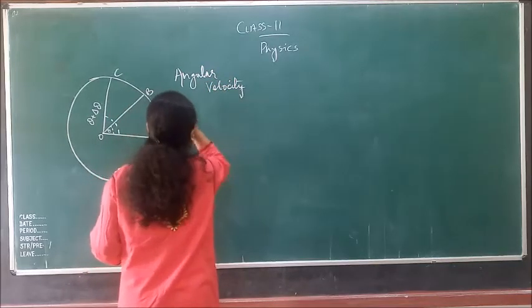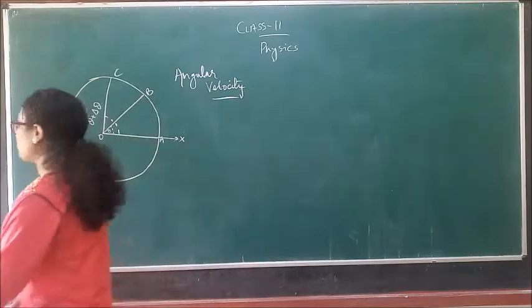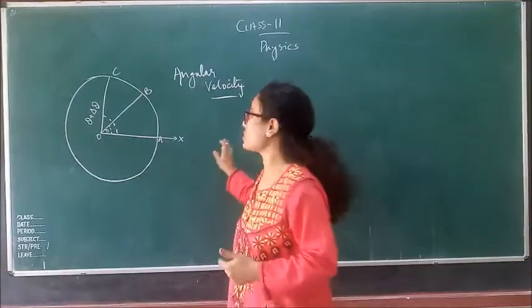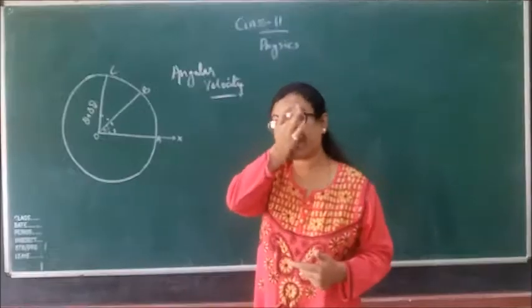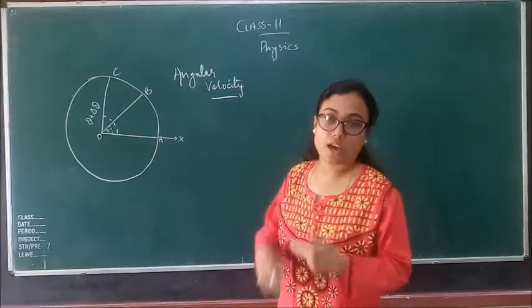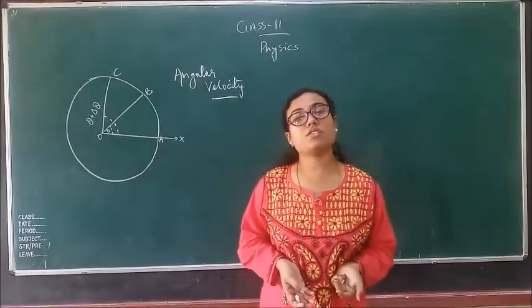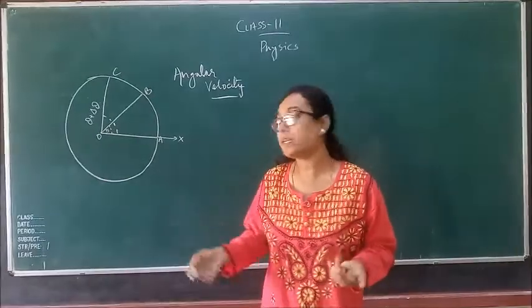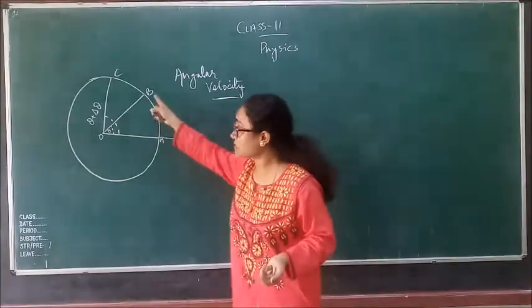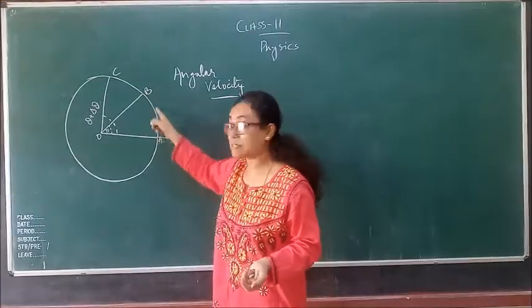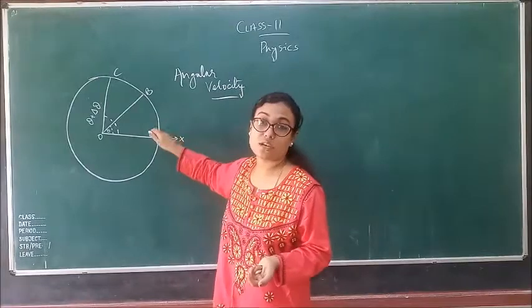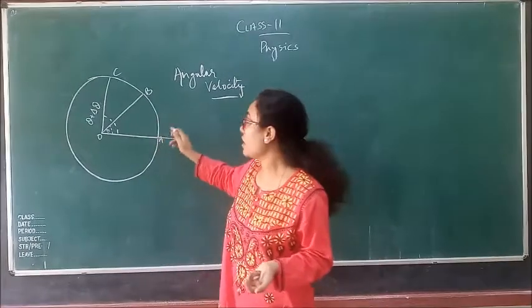What is angular velocity? Angular velocity is the ratio of angular displacement to the time taken. As I told you, velocity is the rate of change of displacement upon time. Here also displacement is there, but the displacement is regarding to the angle.